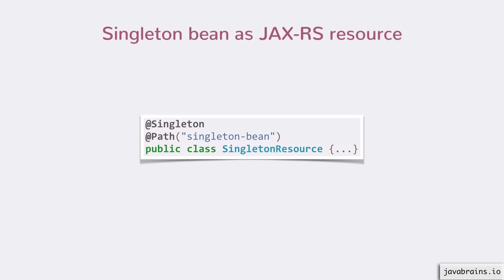Similarly, here's an example of a singleton bean being used as a JAXRS resource. You have @Singleton — this makes it a singleton bean. You also have the @Path annotation, which makes it a JAXRS resource. So whatever JAXRS framework you have, or if you're deploying it in a Java EE container, the JAXRS provider for that container knows that this is a JAXRS resource as well.